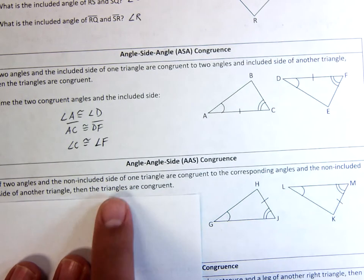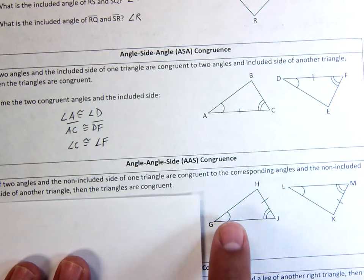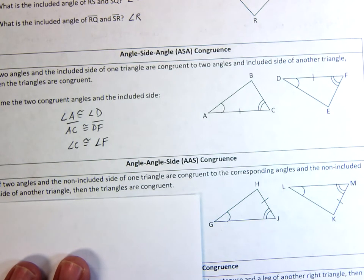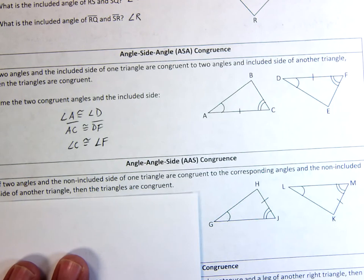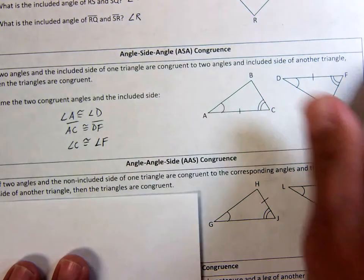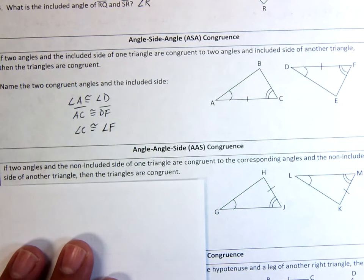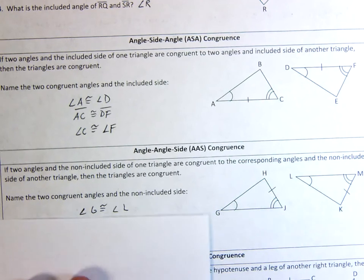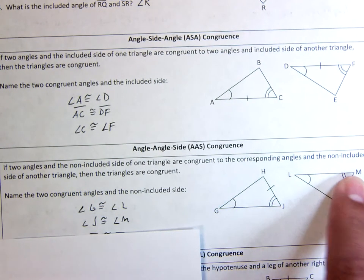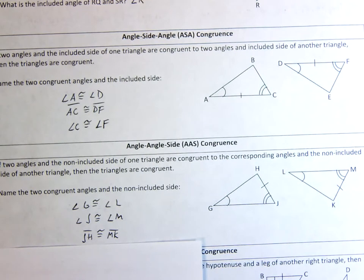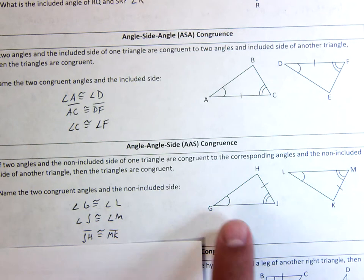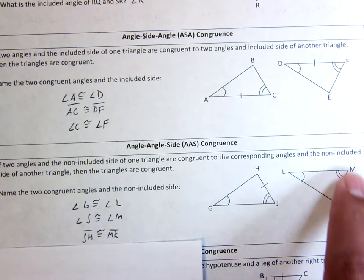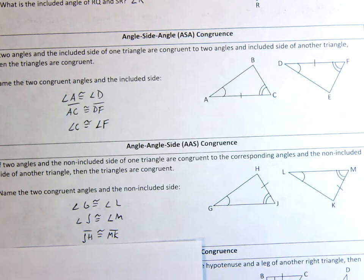AAS: if two angles and the non-included side of one triangle are congruent to the corresponding angles and the non-included side of another, then the triangles are congruent. This is the one where you had a 30-degree angle, a 40-degree angle, and a 6-inch side that was not included. Angle G is congruent to angle L (one arc each), angle J is congruent to angle M (two arcs each), and JH is congruent to MK (tick mark). So by Angle-Angle-Side, I have congruent triangles.